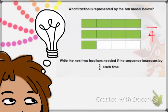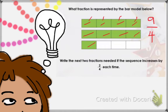For our numerator, we count how many parts are shaded in: 1, 2, 3, 4, 5, 6, 7, 8, 9 — so 9 parts are shaded in, meaning 9 is our numerator. So 9 over 4 is an improper fraction.